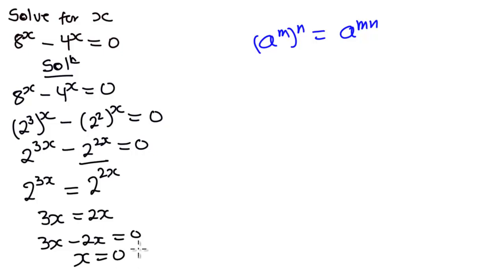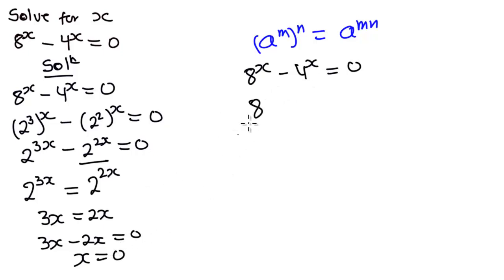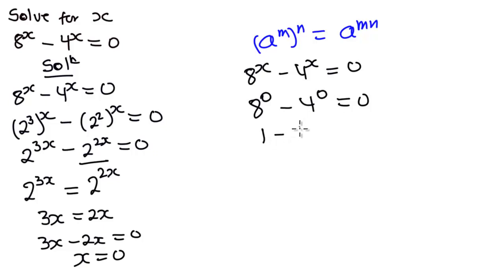Now let's check if x equal to 0 satisfies the equation. We have 8 exponent 0 minus 4 exponent 0 is equal to 0. Since 8 to the power 0 gives 1 and 4 to the power 0 gives 1, we get 1 minus 1 equals 0, which is 0 equals 0. So x equals 0 is confirmed.